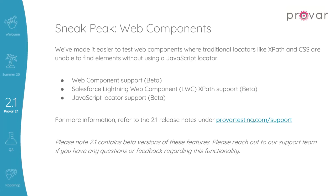In ProVar 2.1, we have introduced enhanced support for testing web components and Lightning Web Components. This additional support will make it much easier to reliably test these components, whereas in the past, traditional locators have been flaky regardless of the testing framework you're using. It's worth noting that we have created our own unique library to better support the testing of these components in 2.1.